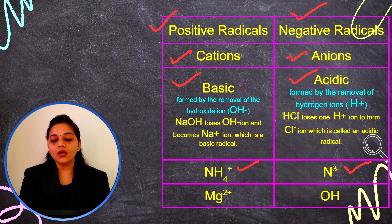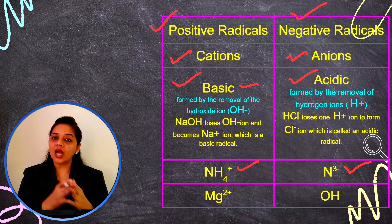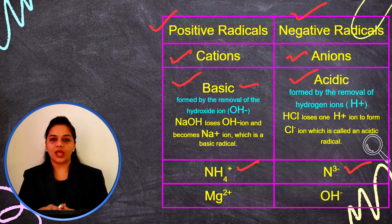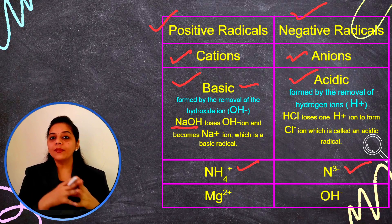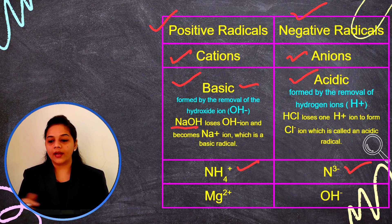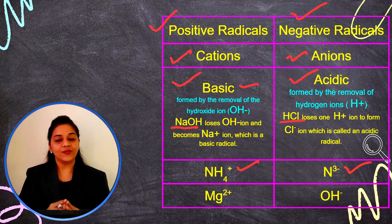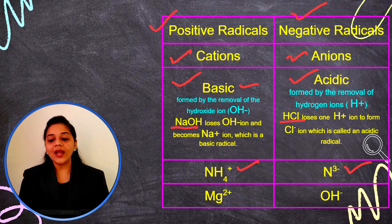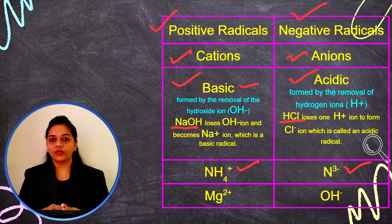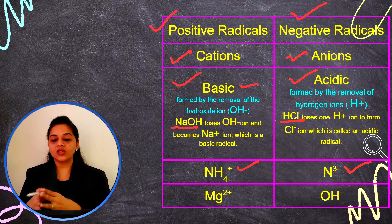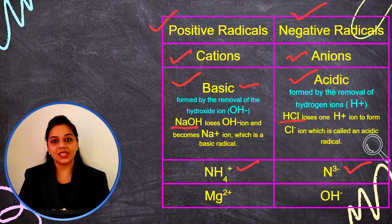Why are positive radicals also known as basic radicals? Because they come from the base part of the chemical reaction. Sodium hydroxide is the base, so the sodium radical comes from the base part, whereas hydrochloric acid is an acid, so chloride ion comes from the acid part. That's why it is known as an acidic radical and positive radical is known as a basic radical.